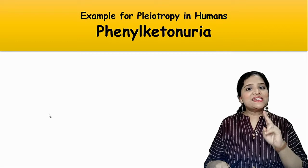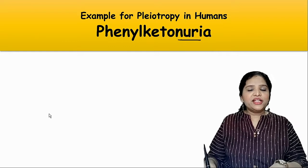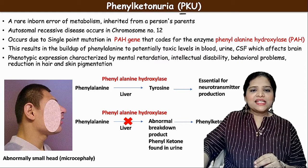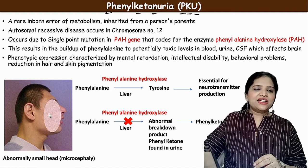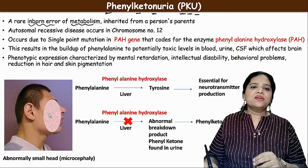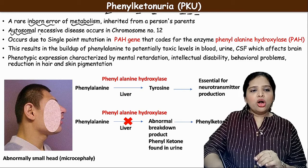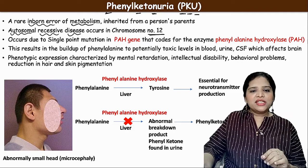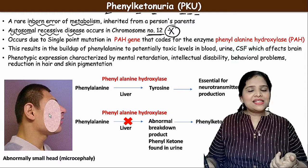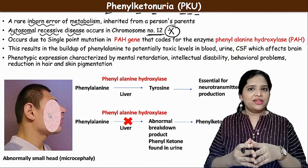Now let us move on to the second example of pleiotrophy in human beings: phenylketonuria, or PKU in short. This is a rare inborn error of metabolism — inborn means it is inherited from parents and the kids have this problem from birth. This is again an example of an autosomal recessive disorder due to a defect in a gene on chromosome number 21.